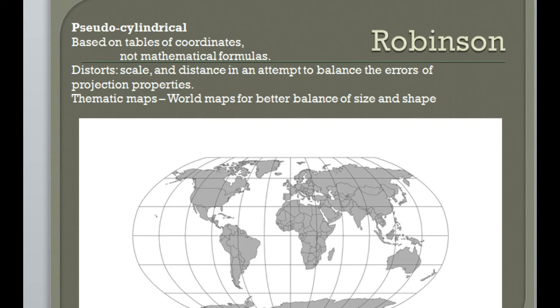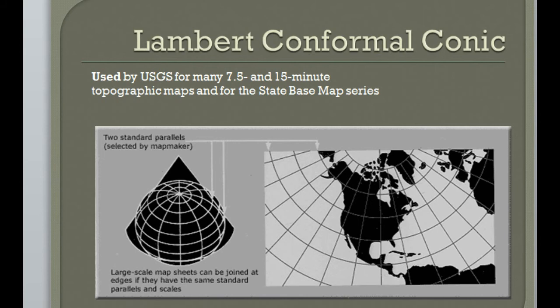A conic projection, again, here is an example of the Lambert conformal conic. It's used almost exclusively in USGS maps. There are two standard parallels, so you've got a lot of accuracy on each of those parallels.